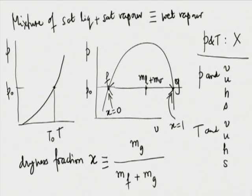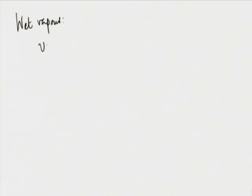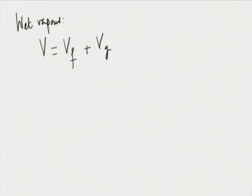States in the two-phase zone are not directly listed in the tables, but the limits are listed: saturated liquid properties and dry saturated vapour properties are tabulated. To calculate properties for wet vapour, since all properties are extensive, the volume of the system equals the volume of the liquid part plus the volume of the vapour part. Dryness fraction is an intensive thermodynamic property.